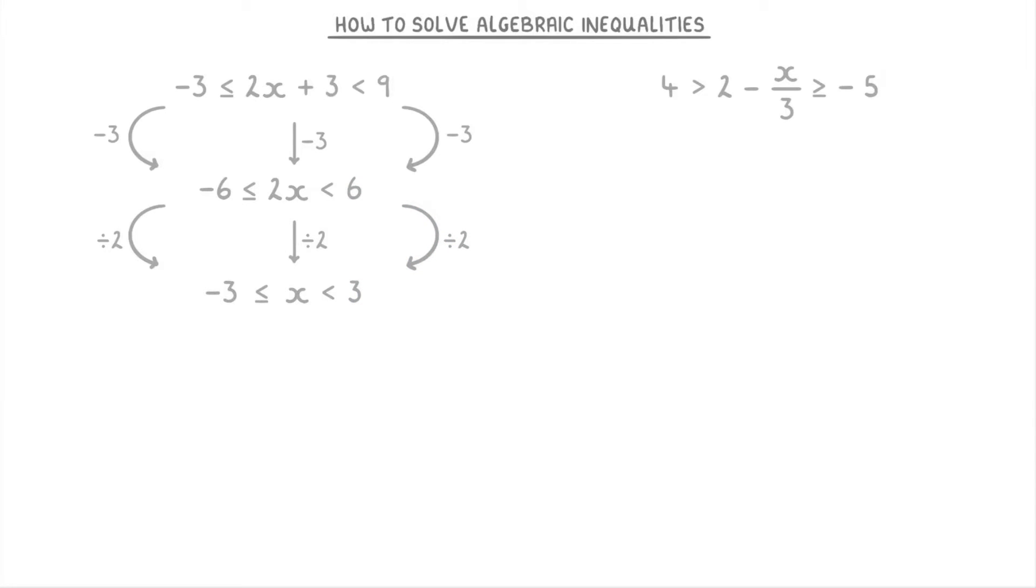So we've basically found that x is in between -3 and positive 3. For the second question here, which says that 4 > 2 - x/3 ≥ -5, we'd start by subtracting 2 from everything to get 2 > -x/3 ≥ -7. Then we can multiply everything by 3 to get 6 > -x ≥ -21.